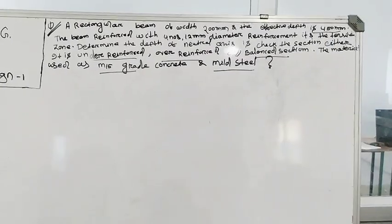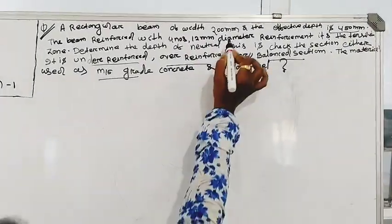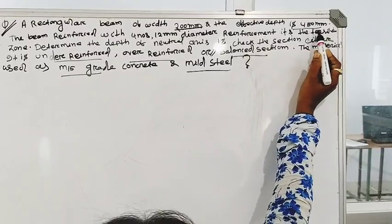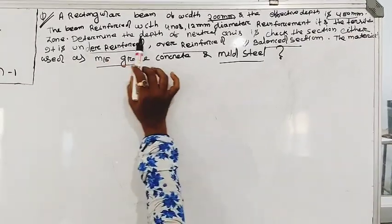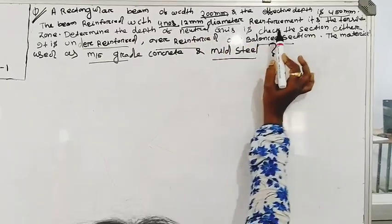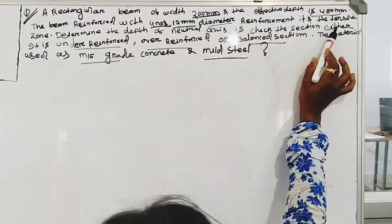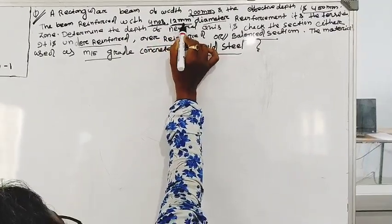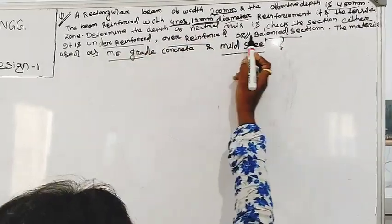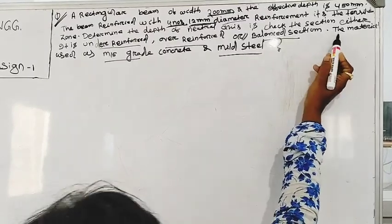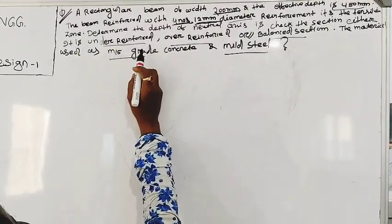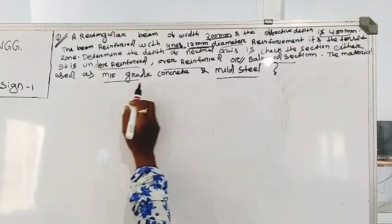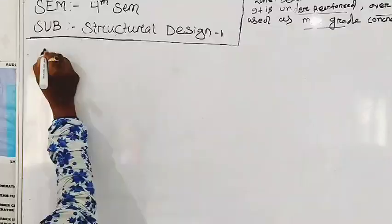A rectangular beam of width 200mm and effective depth 450mm. The beam is reinforced with 4 numbers 12mm diameter bars in the tensile zone. We need to determine the depth of neutral axis and check whether the section is under-reinforced, over-reinforced, or balanced section. The material used is M15 grade concrete and mild steel.